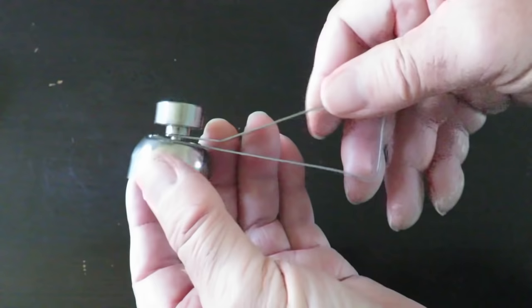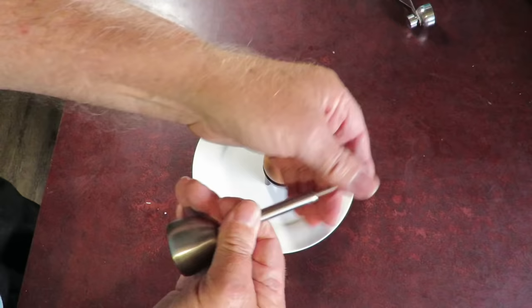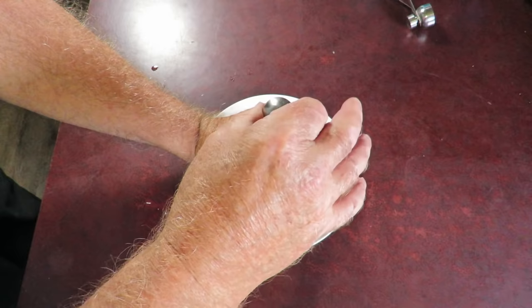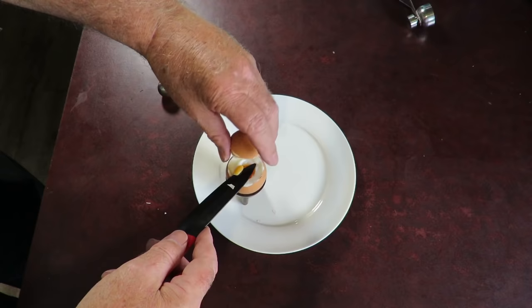Now this particular device is a spring-loaded one. So to get the top to work, you put it on top, hold it in position, lift up the spring, release it, and in theory, if all goes well, it's cut through, which it has. And there you go.